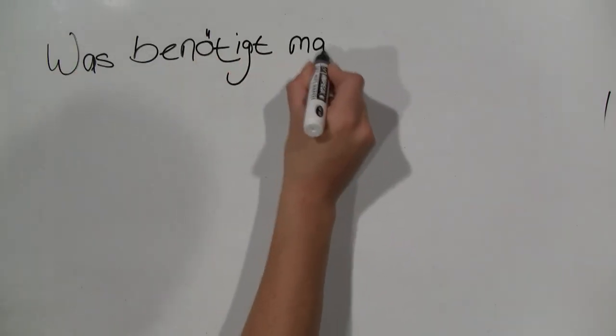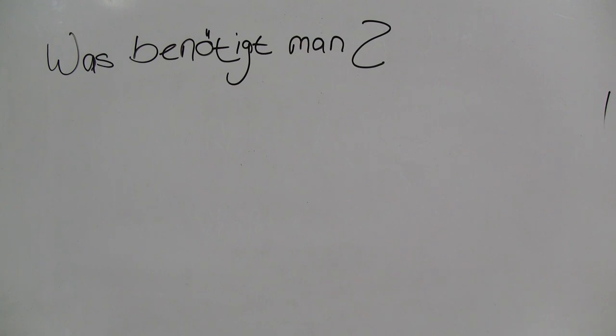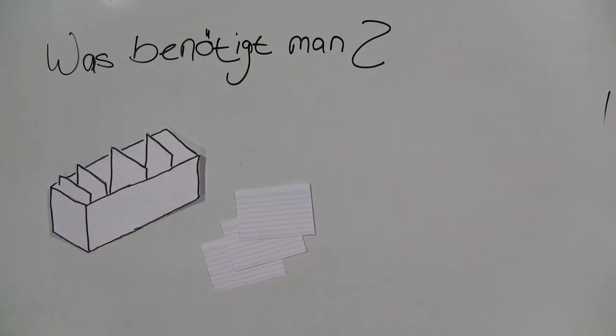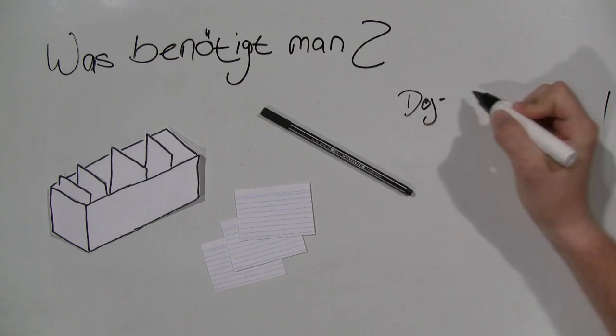First of all, what do you need? That's simple. You need a card box with five compartments, cards, a pen, and of course, vocabulary.